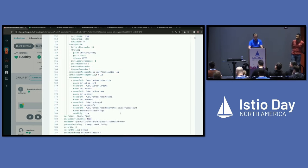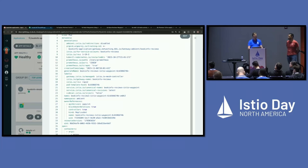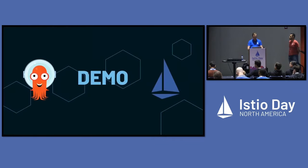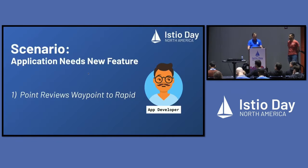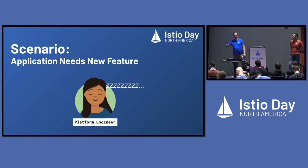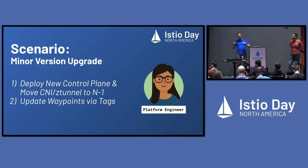It's updated — we're now on rapid. Locust looks good. Now we've done this with our app dev, and our platform engineer was completely uninvolved in the process. The app dev doesn't need to consult them. They can see what the rapid version points to, go to Istio.io and see what features are available, and say, that's what I want to use. We do have the reviews waypoint on tag rapid getting IstioD 1.19.3.